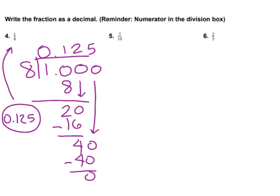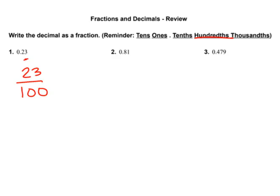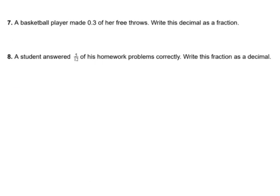Okay, so for the next two, set it up the same way. Top number goes inside the division box. Bottom number goes on the outside. And you're going to just do long division. All right, 7 and 8 are very similar to the ones we just did. They're just written in a word problem, so I'm not going to do those. Just look at what we did on numbers 1 and 4 to help you with 7 and 8.